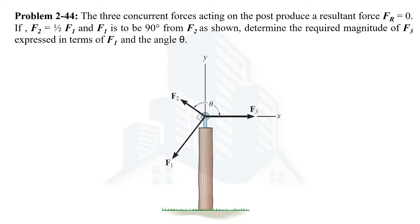What we have been given: the resultant force is zero, the magnitude of the F2 force is half of the magnitude of F1 force, and the angle between F1 and F2 is 90 degrees.